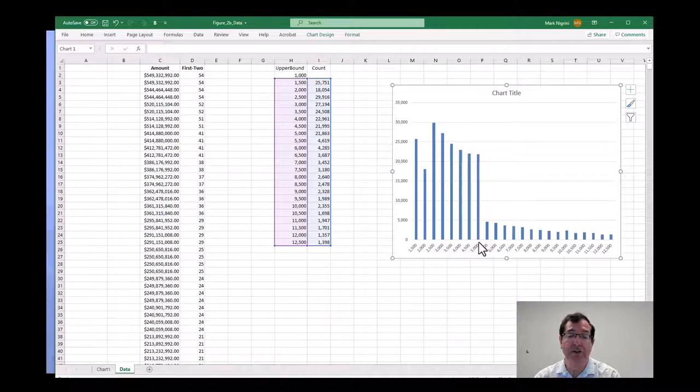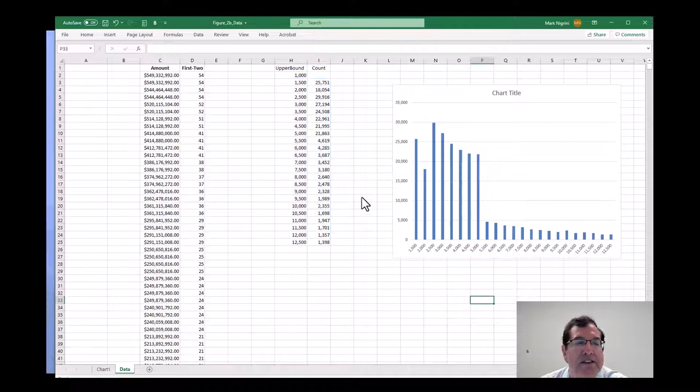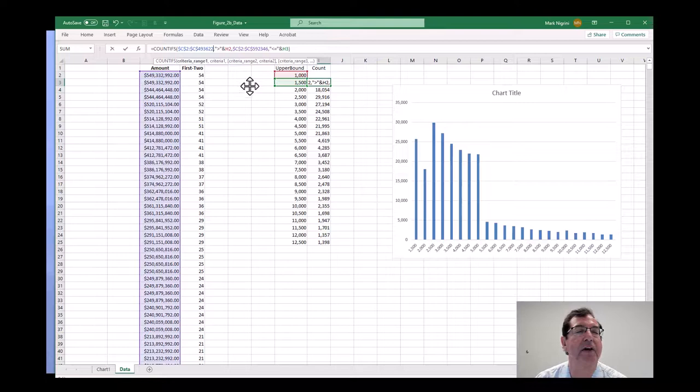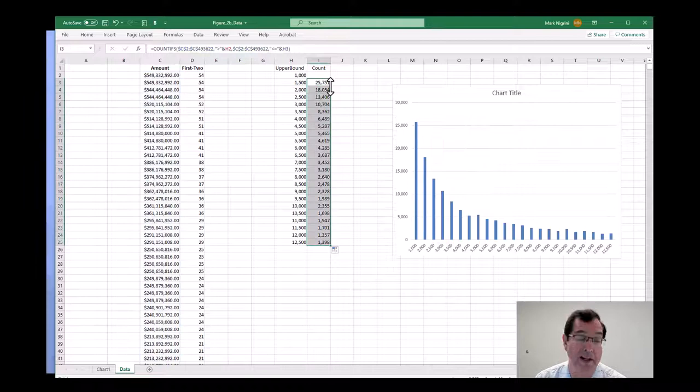I'm going to show what the graph would look like for the data without the fraud numbers, and histograms should normally be smooth. This is the authentic journal entry data. You can see it's monotonically decreasing. This is what a neat histogram would look like. What we just saw was a highly untidy histogram.